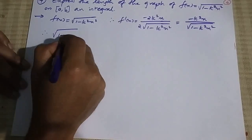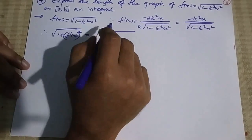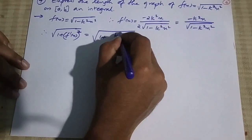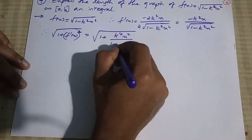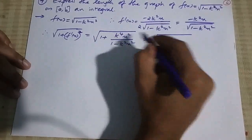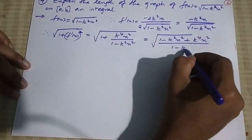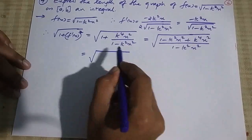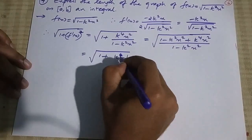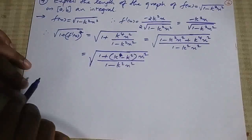Now √(1 + [f'(x)]²) = √(1 + k⁴x² / (1 - k²x²)). Cross-multiplying inside the square root gives √((1 - k²x² + k⁴x²) / (1 - k²x²)), which simplifies to √((1 + (k⁴ - k²)x²) / (1 - k²x²)).